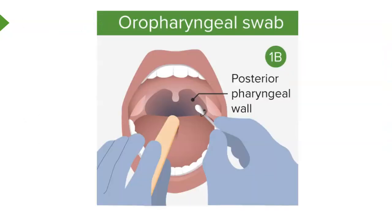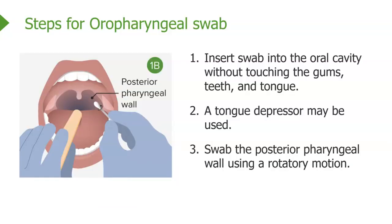You can also take an oropharyngeal swab. You'll notice two blue-gloved hands, a tongue depressor holding down the tongue, and the swab targeting the posterior pharyngeal wall. The circle shown around the swab is a reminder to keep it there briefly to absorb secretions. Insert the swab into the oral cavity without touching the gums, teeth, or tongue — that's why a tongue depressor is recommended. Swab the posterior pharyngeal wall using a rotary motion.